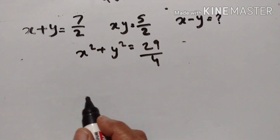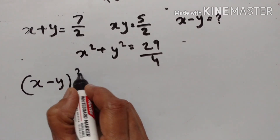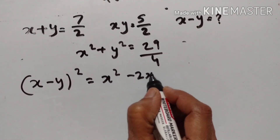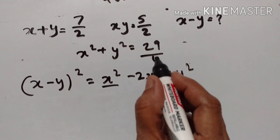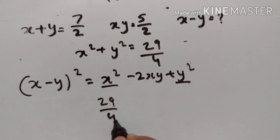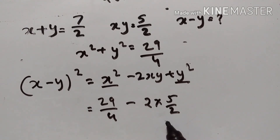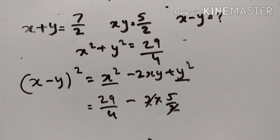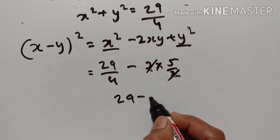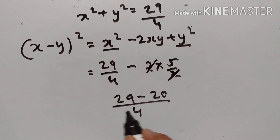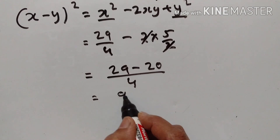Now let us find the value of X minus Y. (X−Y)² = X² − 2XY + Y². X² + Y² = 29/4, and 2×XY = 2×(5/2) = 5. So (X−Y)² = 29/4 − 5 = 29 − 20 over 4 = 9/4.